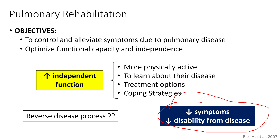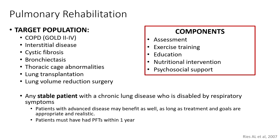Our populations are GOLD classification two through four, anyone with an interstitial disease — IPF, cystic fibrosis, bronchiectasis, chronic variety, thoracic cage abnormalities, post-lung transplantation — we'll learn more about that next week — and lung volume reduction surgery, early major thoracic surgery. The primary components are the assessment, exercise training, education, traditional interventions, and psychological support.